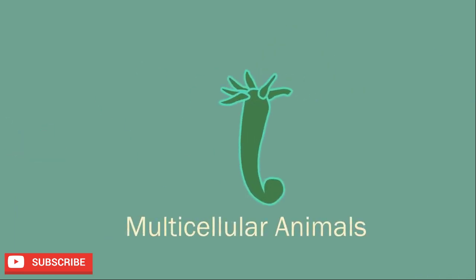Hydra are multicellular animals. They use budding to reproduce asexually. Little buds grow on the outside of the parent and then break off to form separate individuals.